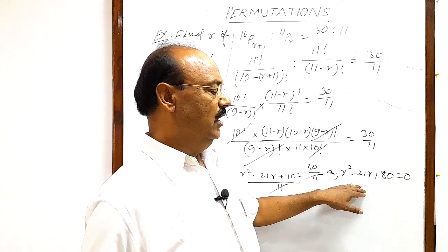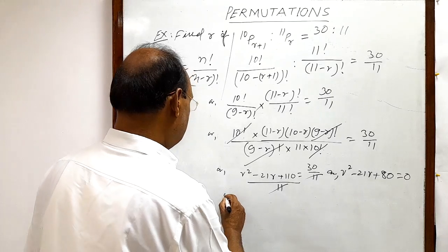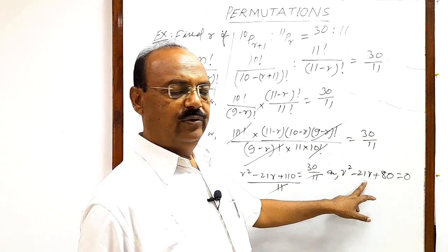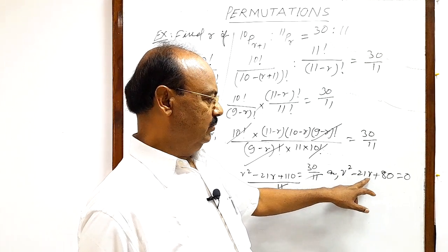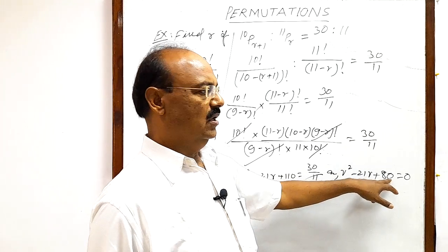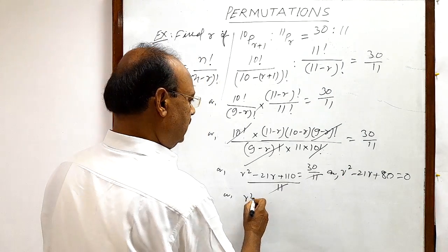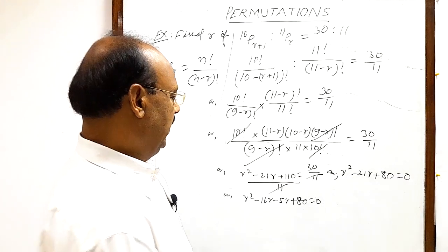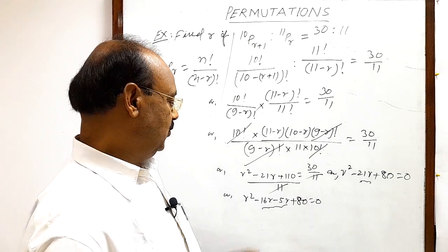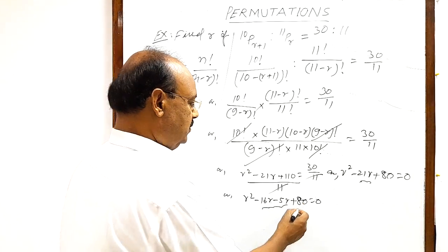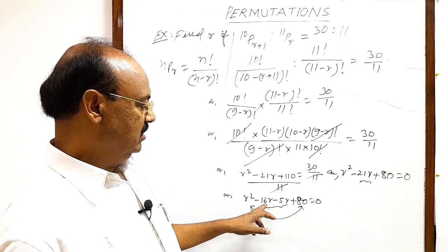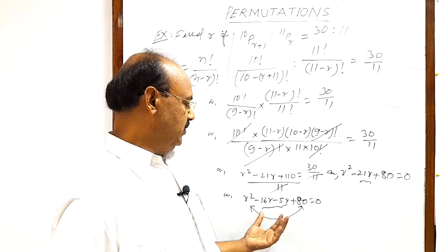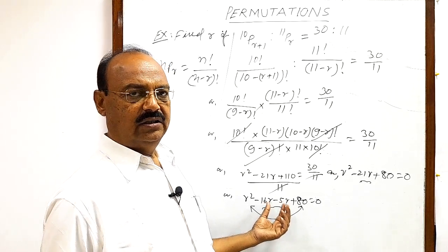Now we have to factorize this quadratic equation and after factorization we will get the value of R. The process is to split the middle term into two parts such that their sum or difference remains minus 21R and their product equals the product of the first and last term, which is 80R squared. So this can be written as R squared minus 16R minus 5R plus 80 equals 0. You see, minus 16R minus 5R is nothing but minus 21R, and the product of these two is 80R squared.